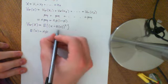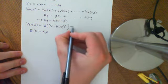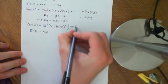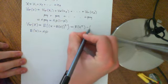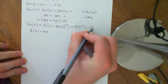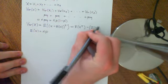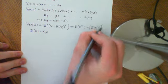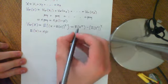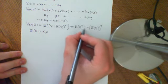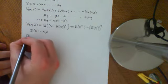We know that the variance of x is given by this formula, and we know that this reduces down to the expected value of x squared minus the expected value of x, squared. Now, we already know what the expected value of x is, so all we need to find is what the expected value of x squared is.